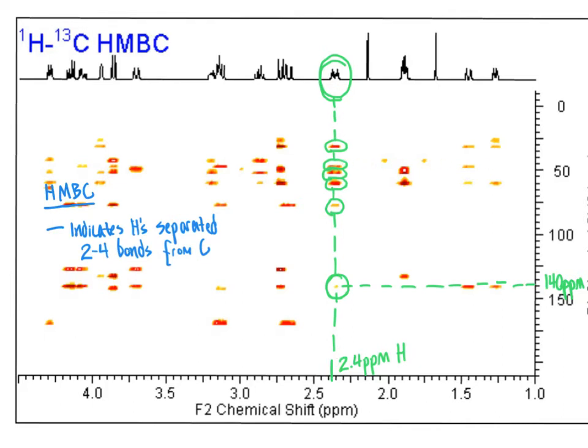We can continue upward and look at the other signals, following them across to find the other carbon atoms separated by two to four bonds from the proton at 2.4 ppm. This adds another piece to our puzzle of understanding the chemical structures of organic molecules. This is very complementary to the HSQC experiment — the heteronuclear single quantum coherence experiment — which looked at which hydrogens are directly bonded to which carbons.